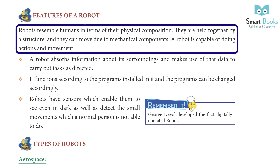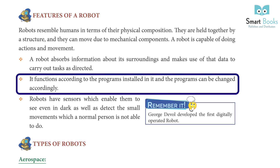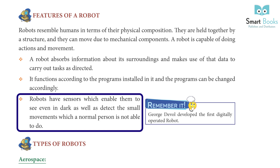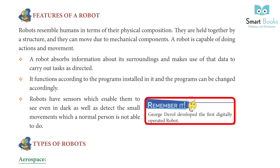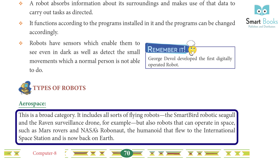Features of a robot: Robots resemble humans in terms of their physical composition. They are held together by a structure and can move due to mechanical components. A robot is capable of doing actions and movements. A robot observes information about its surroundings and makes use of that data to carry out tasks as directed. It functions according to the program installed in it, and the program can be changed accordingly. Robots have sensors which enable them to see even in the dark and detect small movements which a normal person cannot. George DeWall developed the first digitally operated robot.